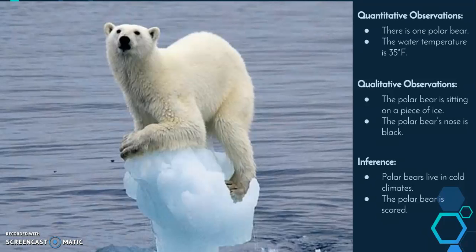A couple of qualitative observations would be something like: the polar bear is sitting on a piece of ice — we can see it, it can't be argued. And the polar bear's nose is black. Again, it doesn't involve numbers, however it can't be disputed that the polar bear's nose is clearly black. Some inferences I could make would be that the polar bear lives in cold climates. We can infer that based on the quantitative observations — we know the water is cold, there's ice floating there — so we may conclude that this is where the polar bear lives and that it is cold.